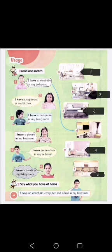Number five — I have an armchair in my bedroom. Where is the armchair in the bedroom? Number five matches with A. Number six, the last one — I have a couch in my living room. So number six matches with C.